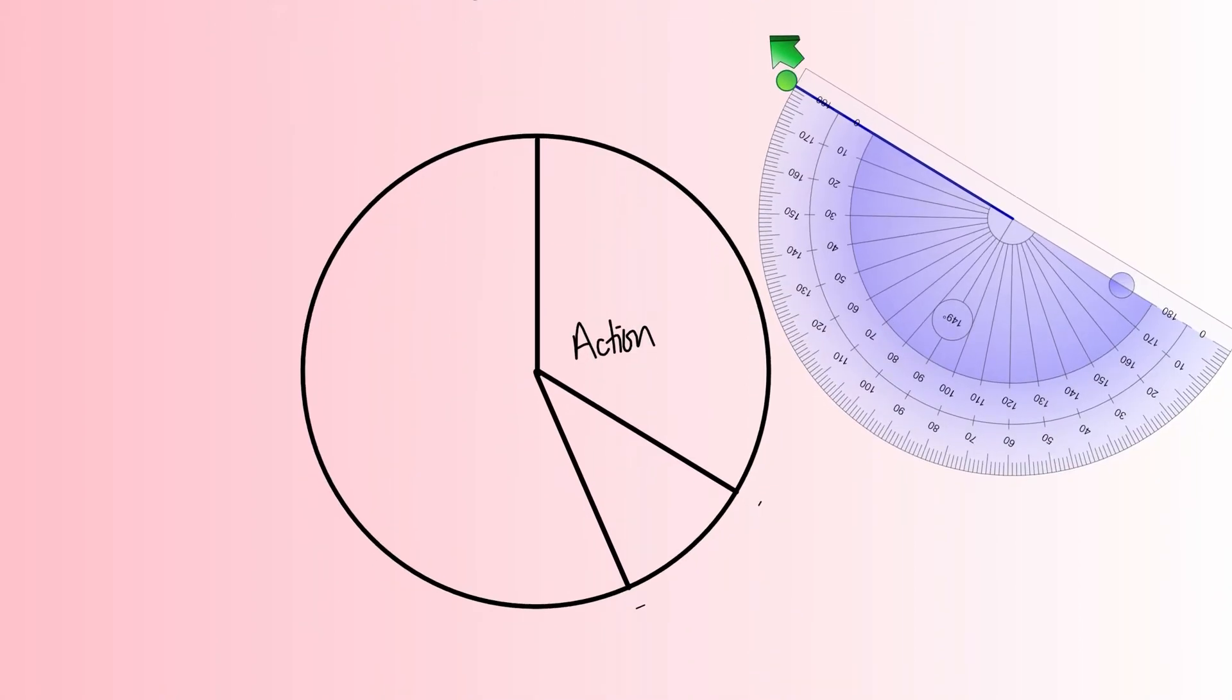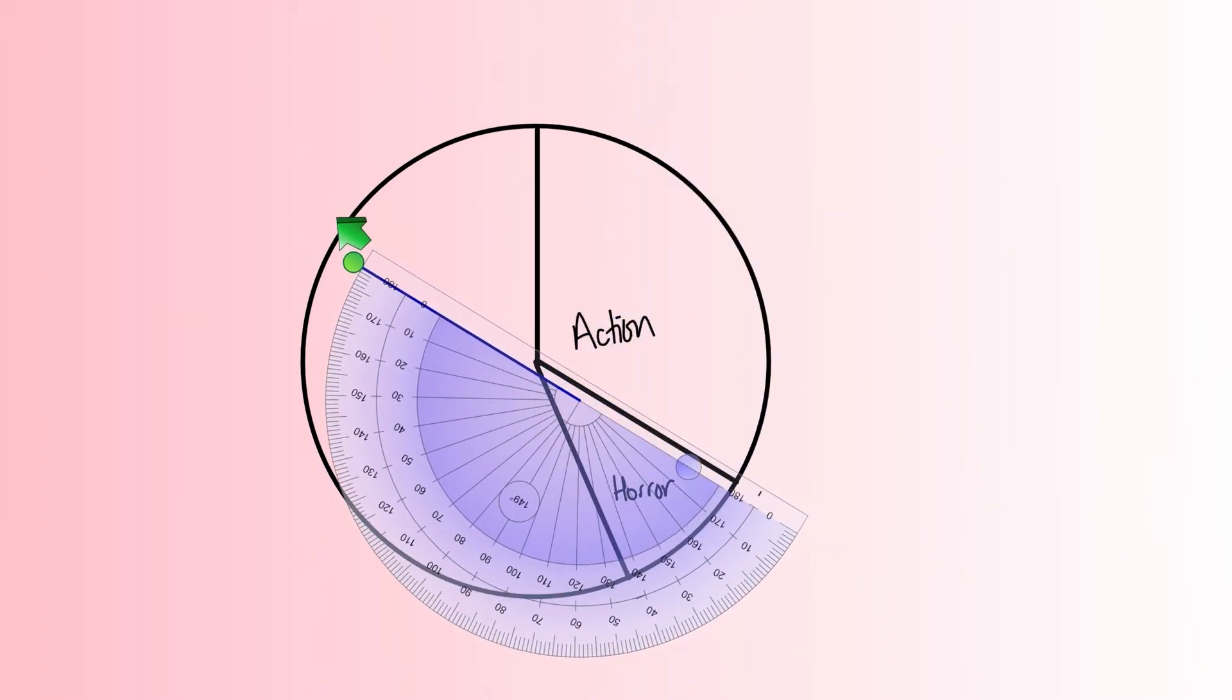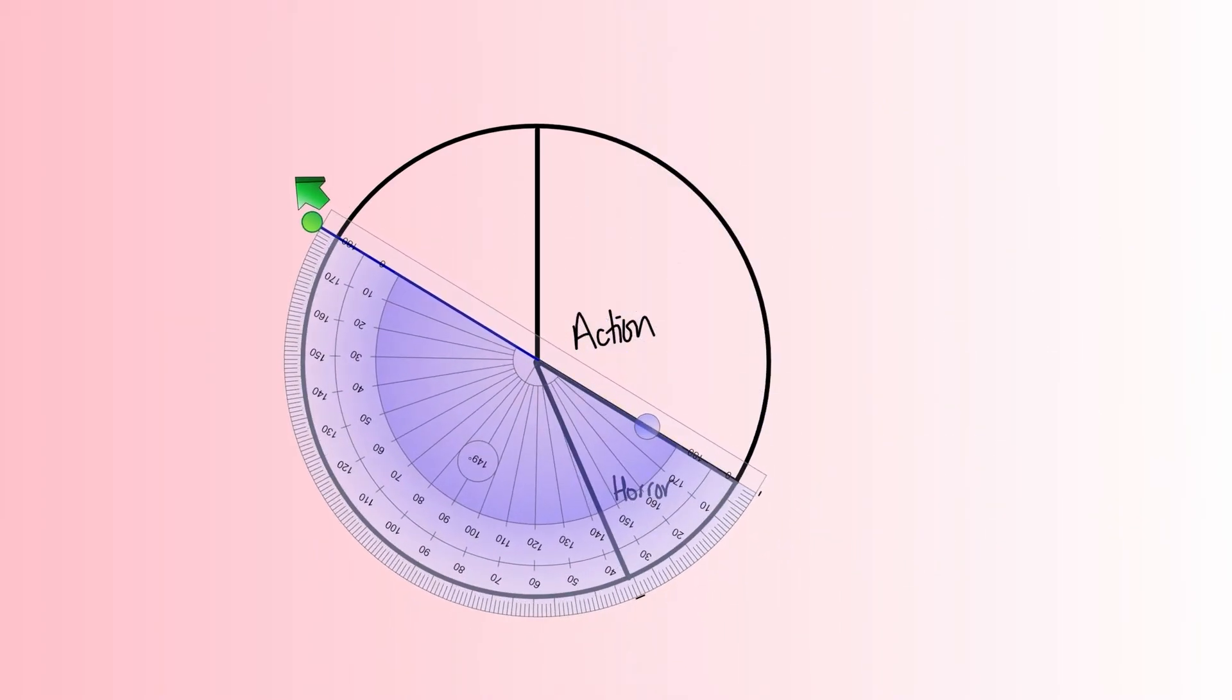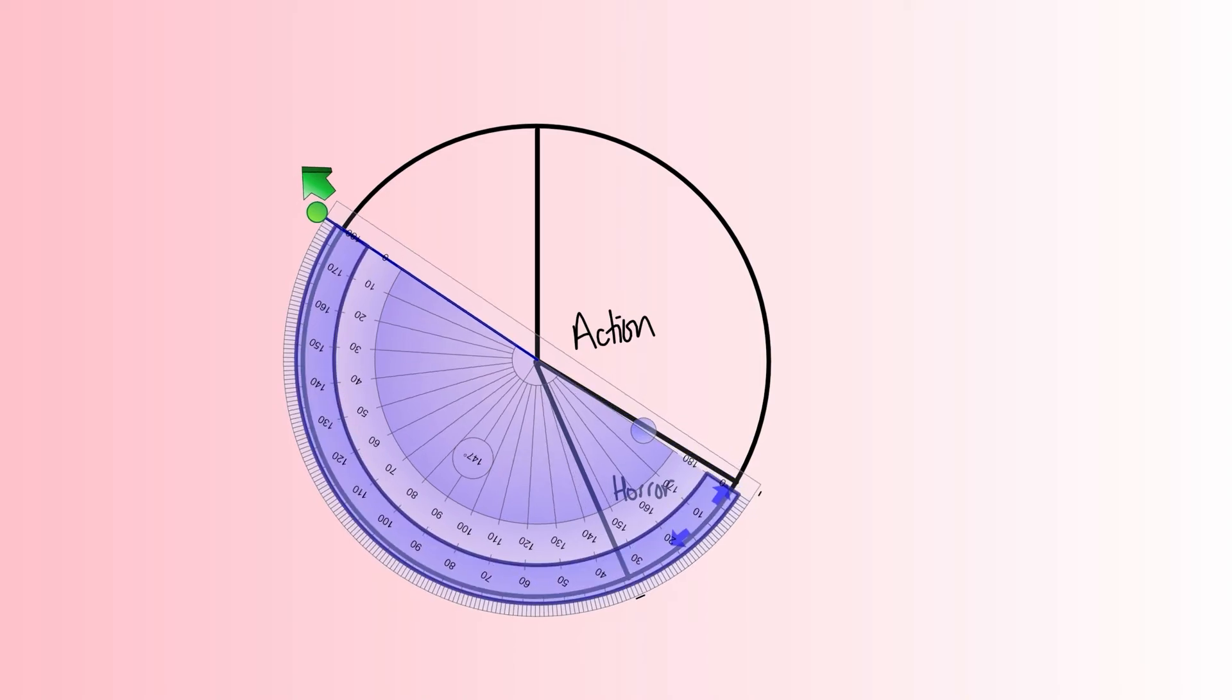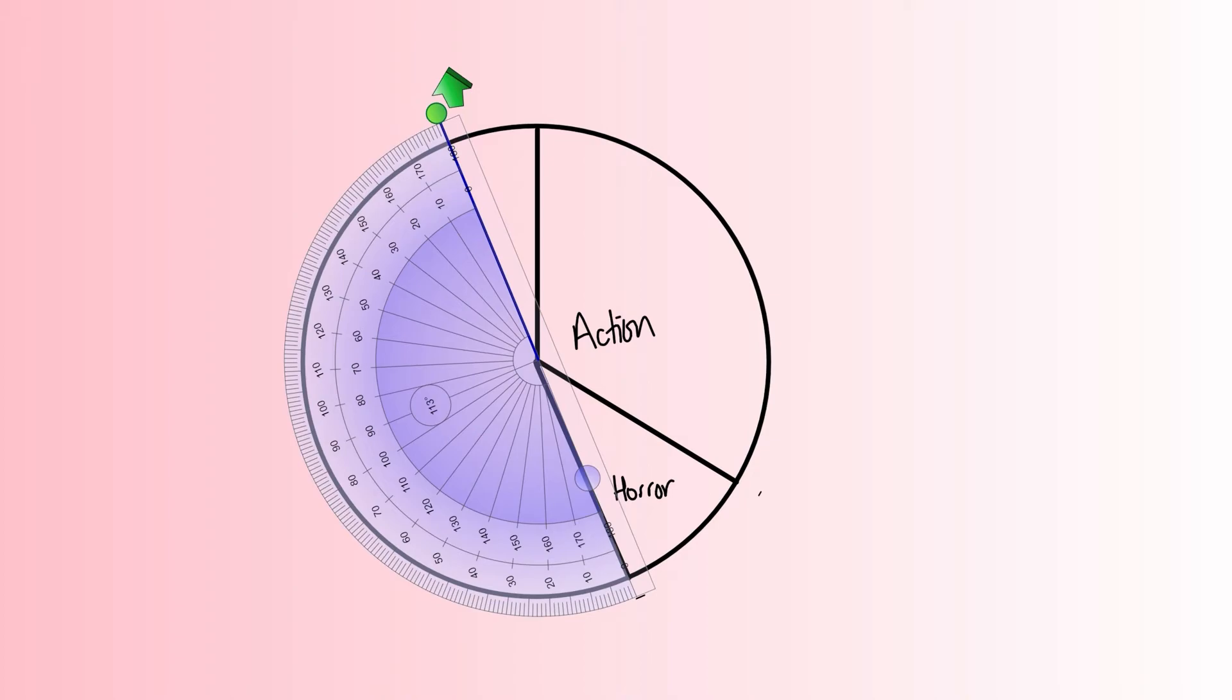The next one is 24 degrees. Again, protractor on the center—it's really important you get as accurate as possible. Spin it around so the zero lines up with the new line and measure 24 degrees. 24 would be around about here. We've got a little mark and we're going to move that away.